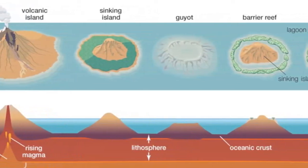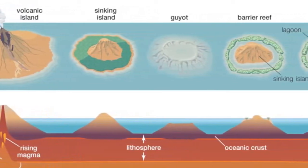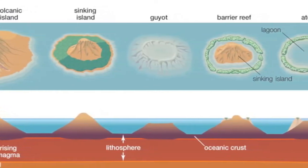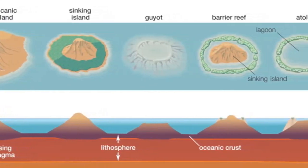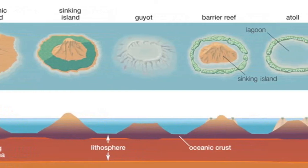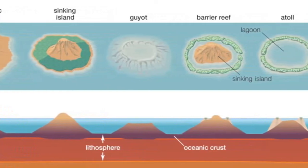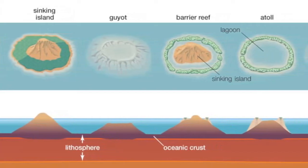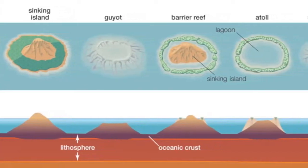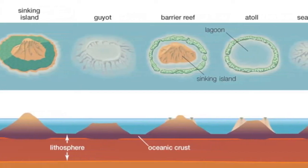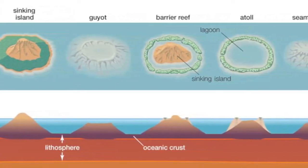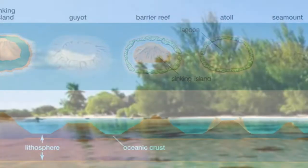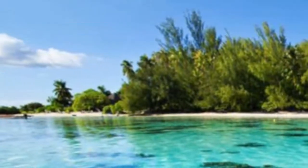The essence of Darwin's hypothesis was that a volcanic island slowly sinks, while the corals continue to build the reef complex upward. Darwin's hypothesis explained how coral reefs, which are restricted to shallow water, can build structures that now exist in much deeper water.